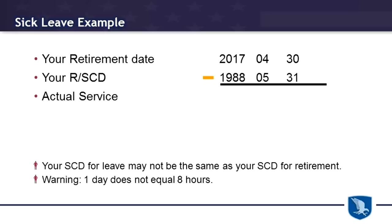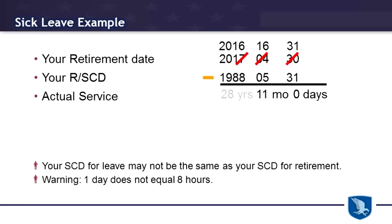So how do we calculate your actual service? Well, step one in this example is to add one to your 30, giving us 31. When we subtract 31 from 31, we get zero. Now for the months — we can't subtract five from four, so we have to borrow a year. 12 and four gives us 16 months minus five months, giving us 11 months. 2016 minus 1988 gives us 28 years, 11 months, no days of actual service.